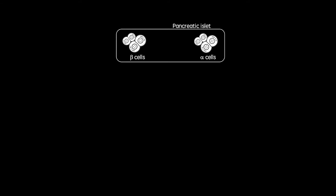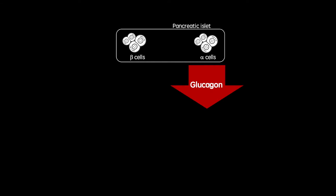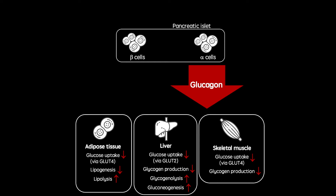When our gastrointestinal tracts are empty, usually periods of above 3 hours after meals, alpha cells secrete glucagon. Glucagon acts in a wide range of tissues in the body, all with the aim of ensuring blood glucose concentrations don't get too low. These effects include inhibiting glucose uptake by bodily tissues, as well as the breakdown of storage molecules to generate glucose.